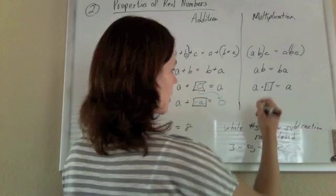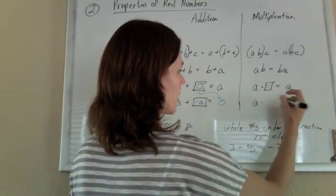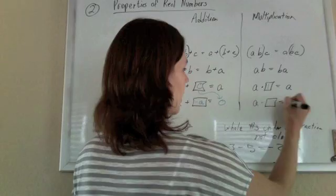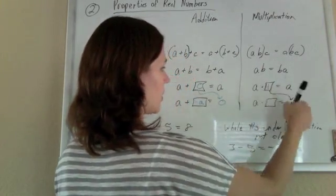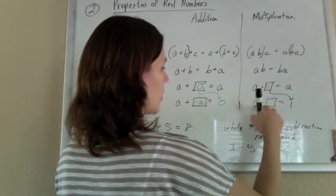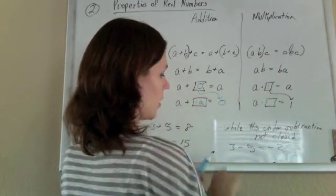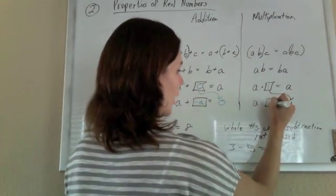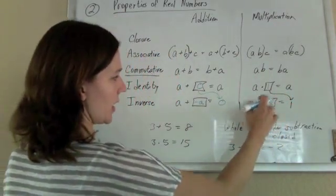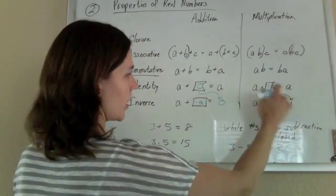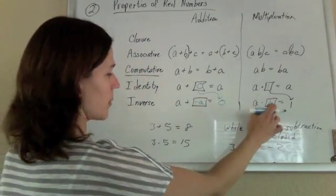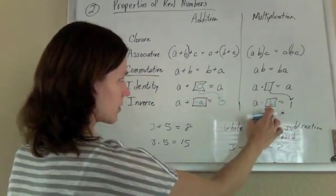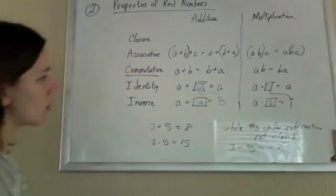Same thing over here. If I want to undo what's happening to A to get my identity element, I would multiply A by 1 over A to undo that. So A times 1 over A would give me 1, which is the identity. And that is my multiplicative inverse. There we go.